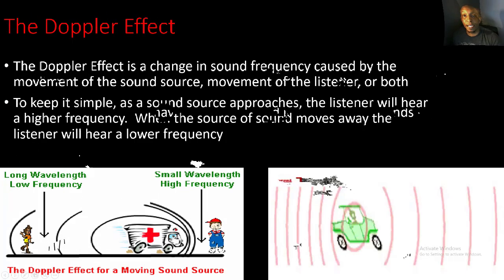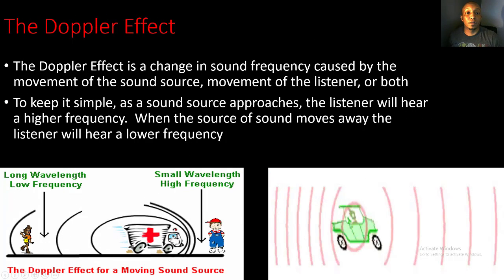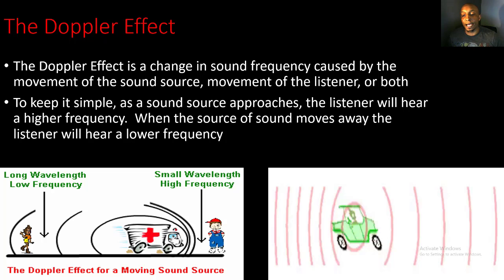Now let's take a look at the Doppler effect. The Doppler effect is a change in sound frequency caused by the movement of the sound source, the movement of the listener, or both. Simply put, as a sound source approaches, the listener hears a higher frequency; when the source moves away, the listener hears a lower frequency. I'm going to make a sound and move my head closer to and further from the microphone — observe the frequency or loudness of the sound.